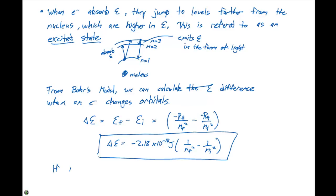If ni is greater than nf, our delta E is gonna be negative, and therefore energy is given off.